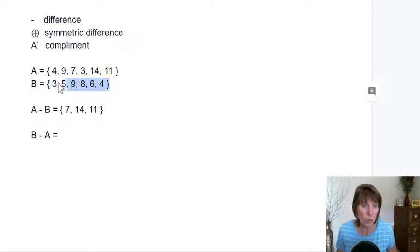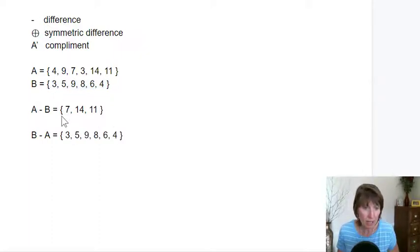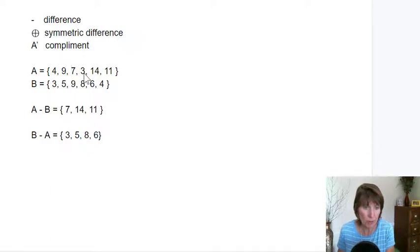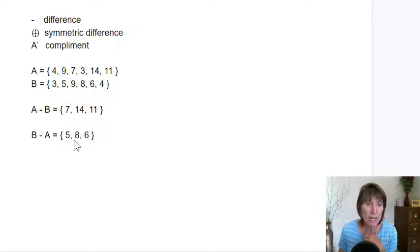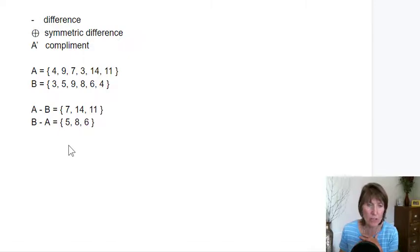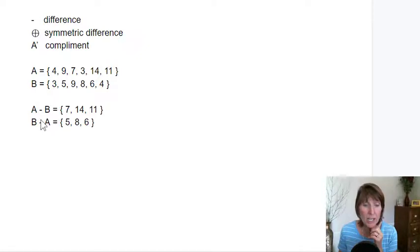Now let's do it the other way, where we start with B and then we subtract out any element that is also in A. So we take out the 4. We take out the 9. We take out the 7 — there's not a 7, so we don't have to worry about that. We take out the 3. There's no 14, and there's no 11. So B minus A is equal to this set. Notice that the results of these set operations are sets themselves.